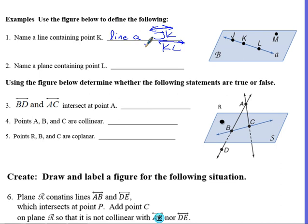Number two, name a plane containing point L. Here, remember, it needs to be three non-collinear points. So, the easiest one, I think, would be to just say plane B. That's our subscripted letter. That means the plane. Or you can say something like plane JLM.